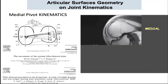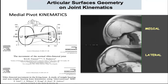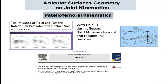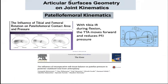The difference between MCL and LCL tension while moving from extension to flexion, combined with the geometry of the joint surface, results in medial pivot kinematics, where the medial femoral condyle remains almost stationary over an almost congruent medial tibial plateau, while the lateral femoral condyle rotates externally and moves from anterior to posterior over the almost flat lateral tibial plateau. The difference in ligament laxity and rotatory movement during flexion also affects patellofemoral kinematics. Not restoring this medial pivot kinematic during total knee arthroplasty negatively affects the patellofemoral joint.